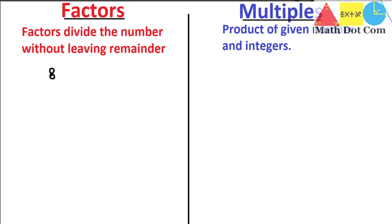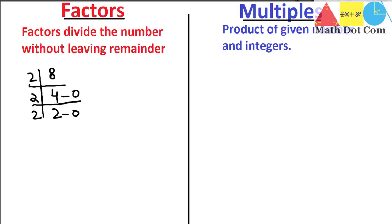For example, if I ask you to find the factors of eight, the easiest method is prime factorization. The smallest number that can divide eight, other than one, is two. Two fours are eight — remainder zero. Then two twos are four — remainder zero. Then two ones are two — remainder zero.